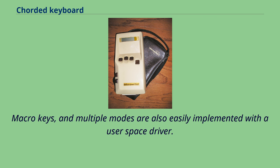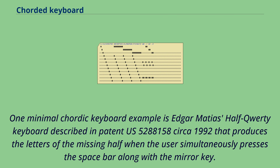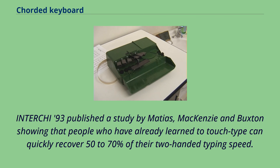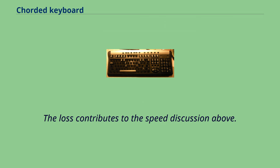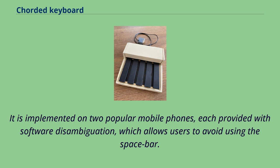One minimal corded keyboard example is Edgar Matias' half-QWERTY keyboard, described in Patent US 5,288,158 circa 1992, which produces the letters of the missing half when the user simultaneously presses the spacebar along with the mirror key. A study by Matias, McKenzie, and Buxton showed that people who have already learned to touch type can quickly recover 50 to 70 percent of their two-handed typing speed. It is implemented on two popular mobile phones, each provided with software disambiguation, which allows users to avoid using the spacebar.